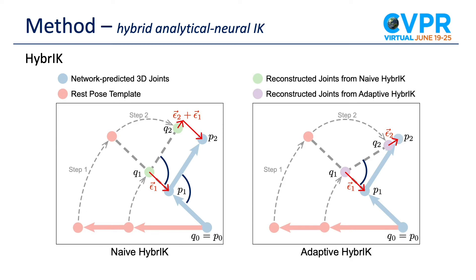To conduct the inverse kinematics process, we solve the rotations of each body part along the kinematic tree. This process is called naive hybrid. However, naive hybrid solves the rotation according to the original key points, which may accumulate errors along the kinematic tree. To address this issue, we further propose adaptive hybrid. Adaptive hybrid solves the rotation according to the reconstructed position of the parent's key point, so errors won't accumulate.